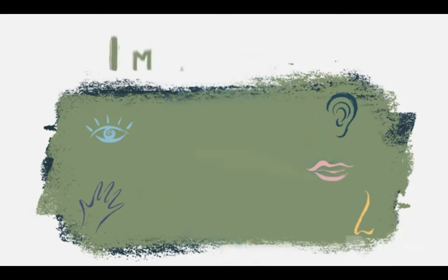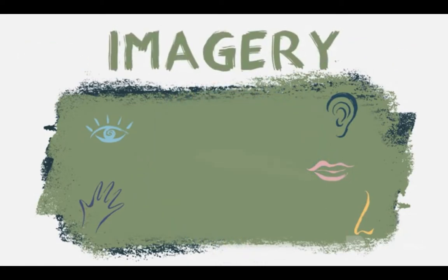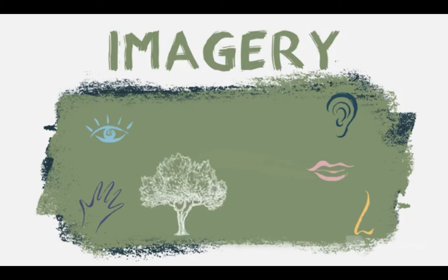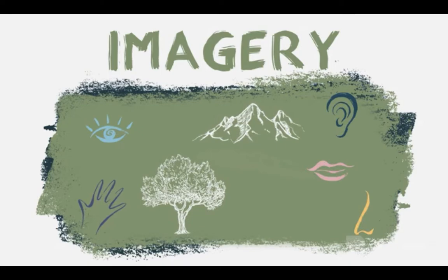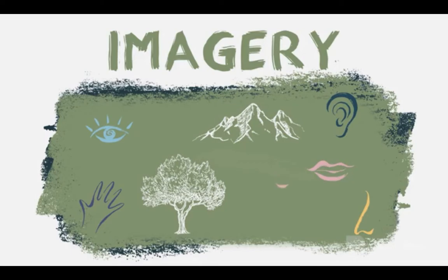Now it's your turn to explore imagery. Think about a tree or natural environment that is special to you. Describe it in as much vivid detail as you can. Try to evoke all five senses with the imagery you use. What does your tree smell, feel, taste, sound and look like?